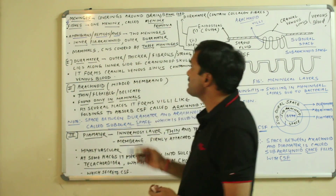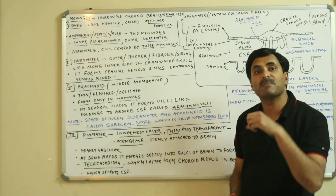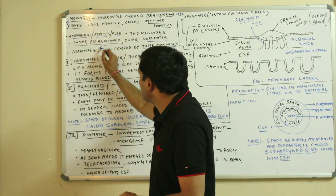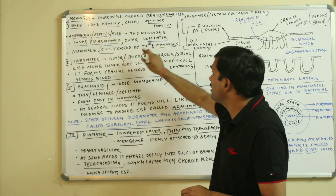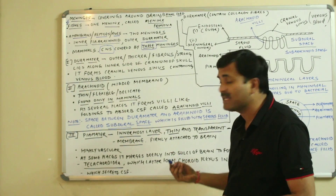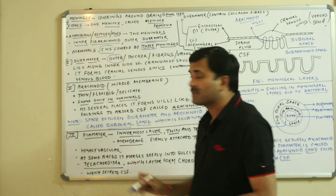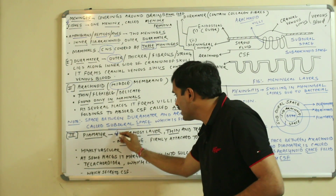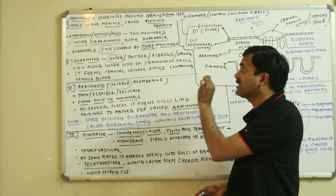In mammals, including humans, the CNS — that is the central nervous system, consisting of the brain and spinal cord — is covered by three meningeal layers. From outside to inside, these are: the dura mater (outermost), the arachnoid (middle), and the pia mater (innermost).